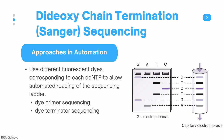Sanger sequencing is still widely used today mainly because it can be adapted for automation. In automated sequencing, instead of radioactive dyes, we use different fluorescent dyes corresponding to each ddNTP to allow for automated reading of the sequencing ladder. There are two types: dye primer sequencing, where the dye is attached to the primer, and dye terminator sequencing, where the dye is attached to the ddNTP.